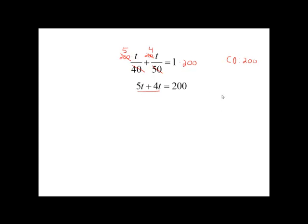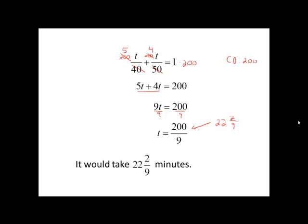Combine the like terms. 9t equals 200. And we'll finish by dividing both sides by 9. 200 over 9, that doesn't divide evenly. So we need to make this into a mixed number. By dividing, we could see that 200 over 9 is the same as 22 and 2 9ths. So it would take them 22 and 2 9ths minutes working together.